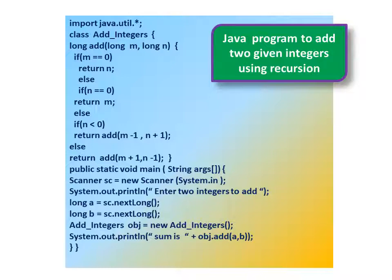public static void main(String[] args). Scanner sc = new Scanner(System.in). System.out.println: enter two integers to add. long a = sc.nextLong(). long b = sc.nextLong(). AddIntegers obj = new AddIntegers(). System.out.println: sum is + obj.add(a, b).